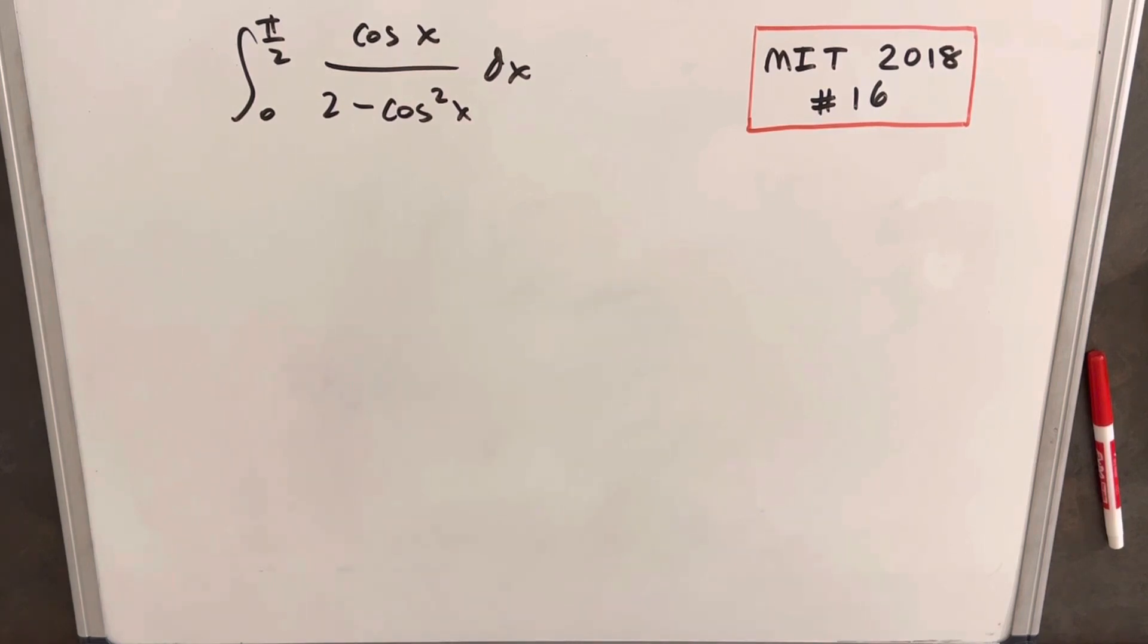Hey, this is MIT Integration B 2018, problem number 16. We have the integral from pi over 2 to 0 of cosine x over 2 minus cosine squared x, dx.